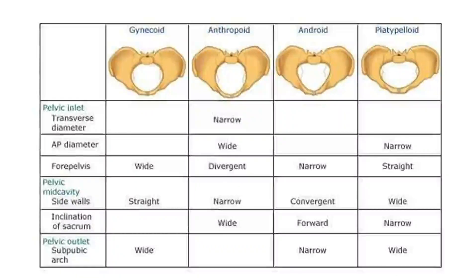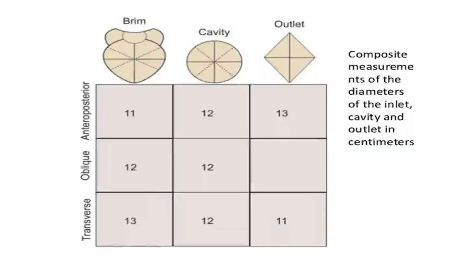These are the differences between gynecoid, anthropoid, android, and platypelloid pelves. These are the diameters and combinations of the brim, cavity, and outlet. Thank you for listening.